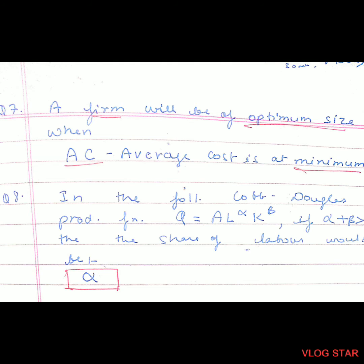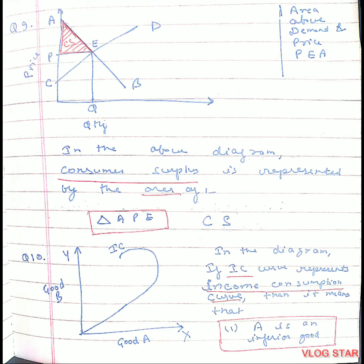Question 7. A firm will be at the optimum size when average cost is at the minimum. Question 8. In the Cobb-Douglas production function, output equals A times L to the power alpha times K to the power beta. If alpha plus beta is greater than 1, then the share of labor would be alpha.